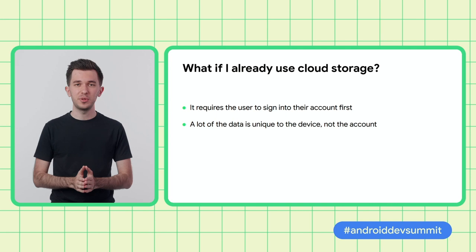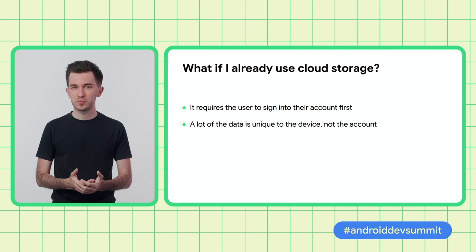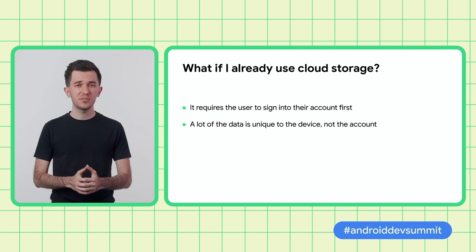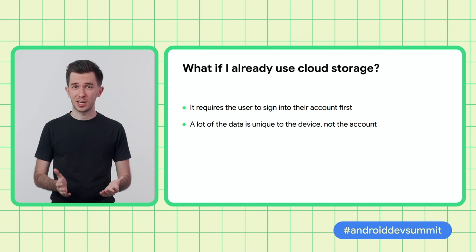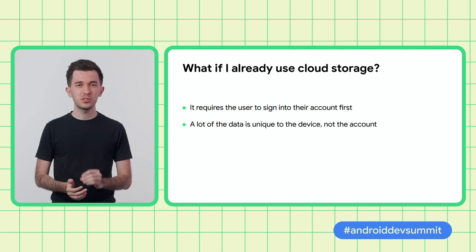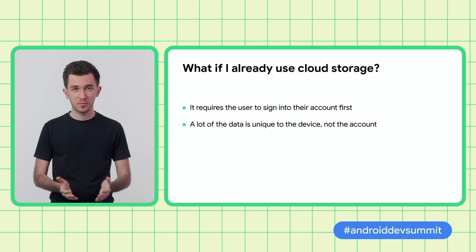At this point, you might be thinking: I already used some kind of solution to keep my user's data synced to the cloud, like Firebase or a custom backend — why do I need Backup and Restore? First of all, to take advantage of in-app cloud sync, the user needs to sign into your app, whereas the data handled by Backup and Restore is available even before that, because we've already identified the user through their Google account. Second, and maybe even more importantly, there is lots of data that is unique to the device and not to the account within the app, and such data apps don't usually sync to the cloud.